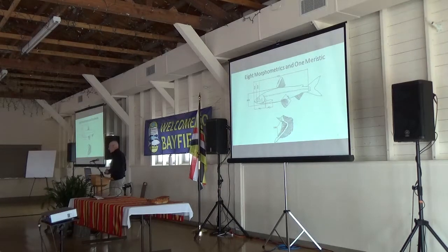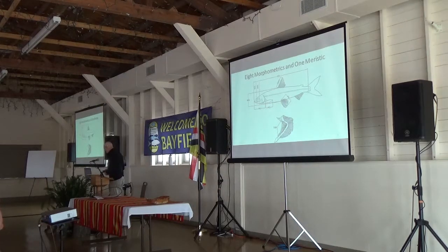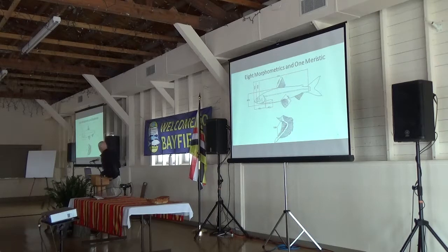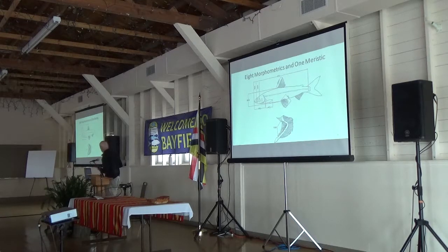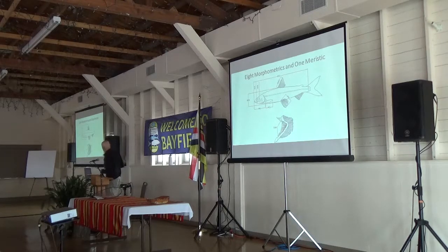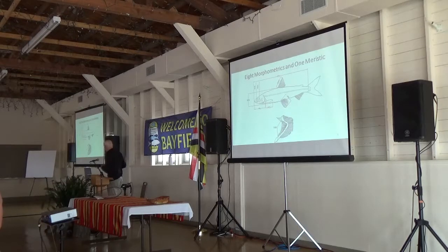The rest of the talk is going to be based on eight morphometrics and one meristic. The morphometrics are: body depth, head length, pre-orbital length, orbital length, dorsal fin height, pectoral fin length — eight morphometrics total. The one meristic is total gill raker number.